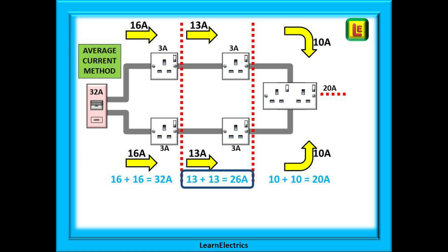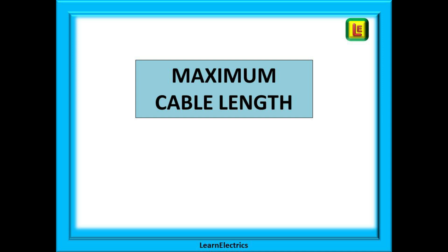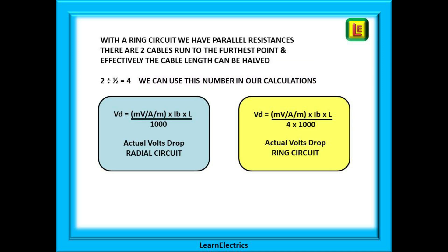Let's start by calculating some maximum cable lengths. If we do this first it is much easier to understand the voltage drop calculation. With a ring circuit we have parallel resistances. There are two cables that run to the furthest point, which means that effectively the cable length can be halved. Two cables, half the length. Two divided by a half gives us four. Now remember this number four, we're going to use it in our calculations.